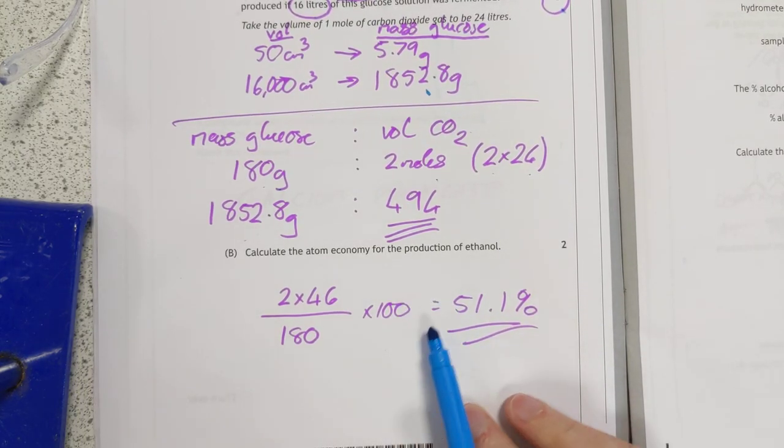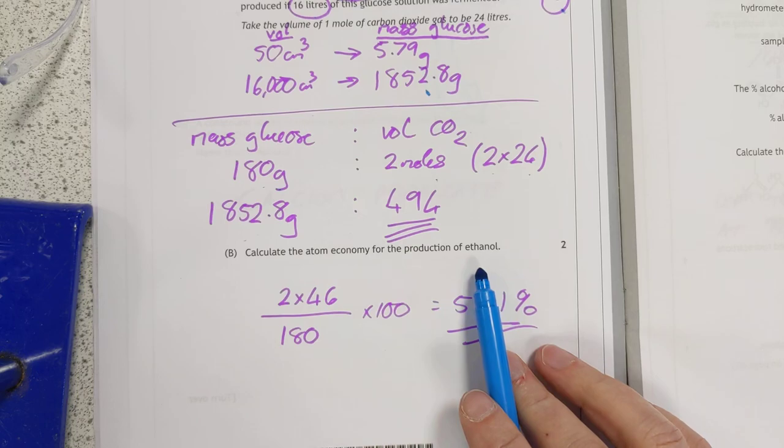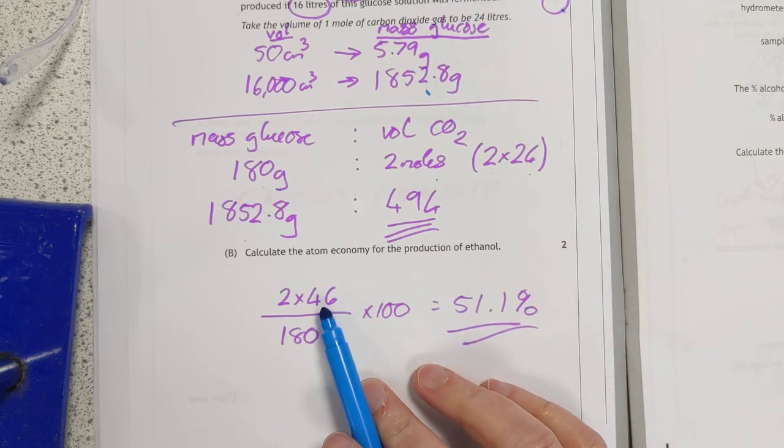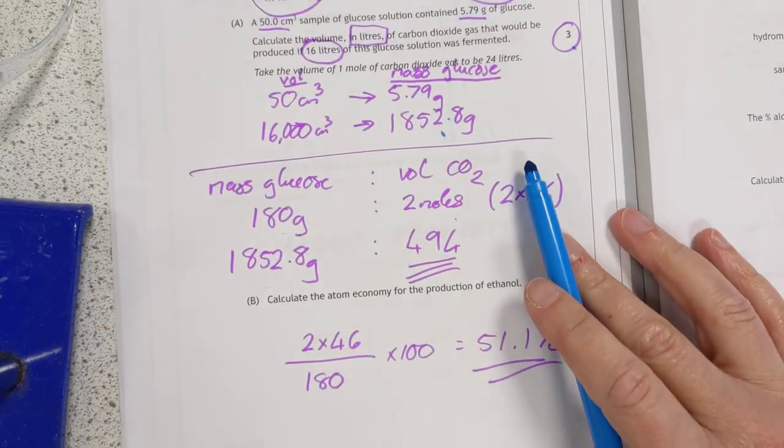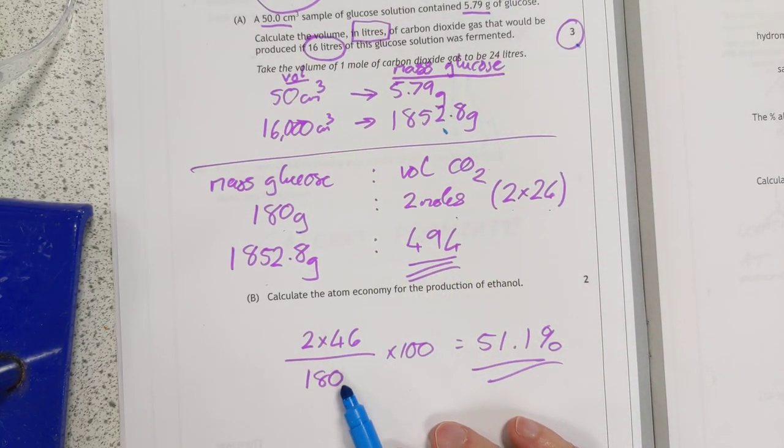Atom economy for production of ethanol. Why did I multiply that by 2? Because there's 2 of them. So it's the total mass of the desired product over the mass of your reactant. So 51%.